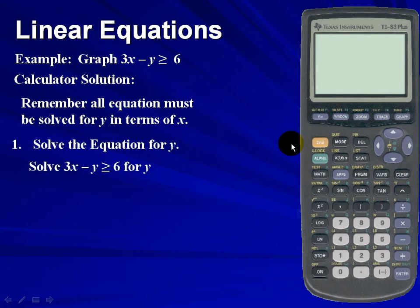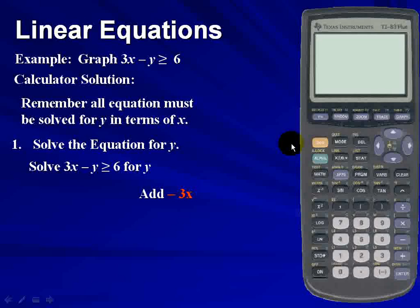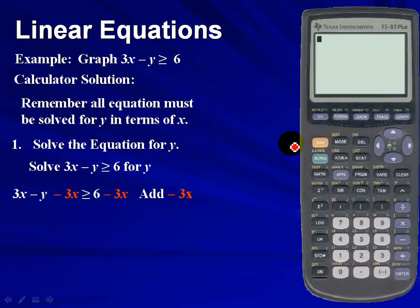We're going to take our equation 3x - y ≥ 6 and solve it for y. The first thing we want to do is add -3x to both sides of our equation. Notice that once we add -3x to our left-hand side, the 3x variable cancels.